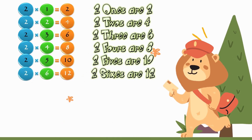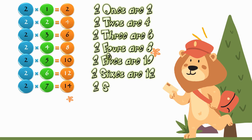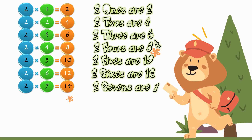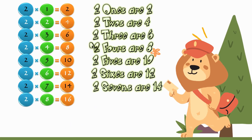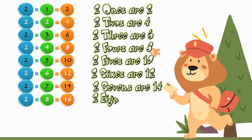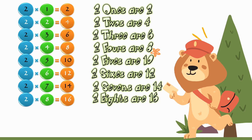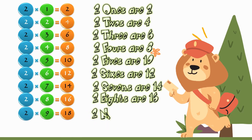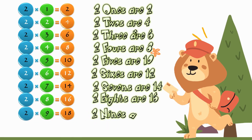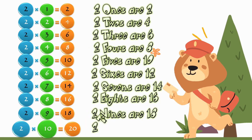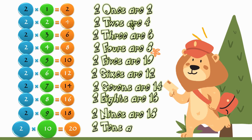Two sixes are twelve. Two sevens are fourteen. Two eights are sixteen. Two nines are eighteen. Two tens are twenty.